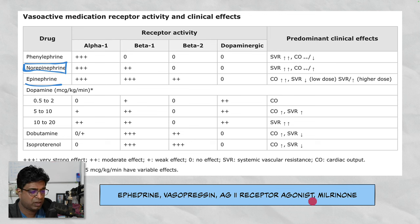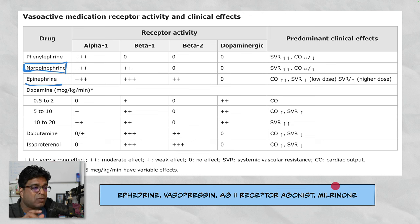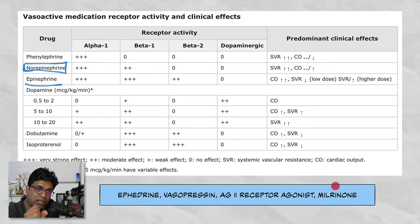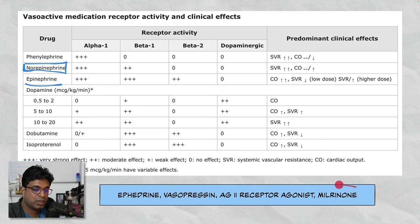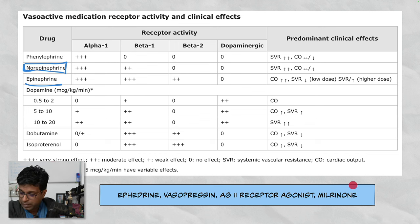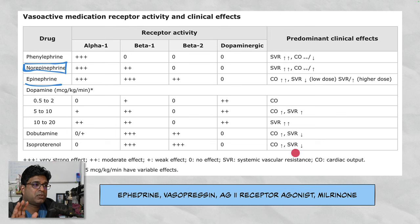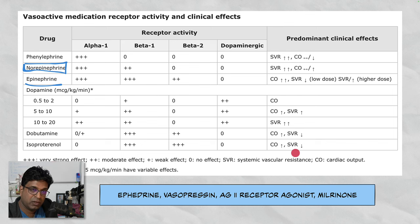Milrinone is an indirect agent — it is a phosphodiesterase-3 inhibitor. Because of this inhibition, cyclic GMP increases, intracellular calcium increases, and it causes increased contractility of blood vessels and the heart. It has an indirect effect not acting on these receptors directly. It is used in refractory cases when other vasopressors or inotropes are not working, as an adjuvant to them. These are the common agents — don't get confused if you can't remember all of this now; we'll cover more in the next few slides and you will develop a good grasp.